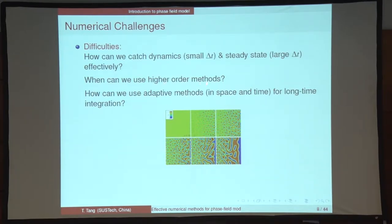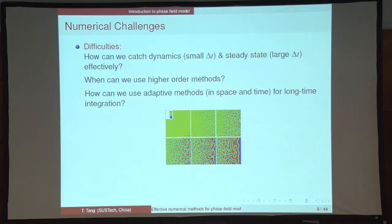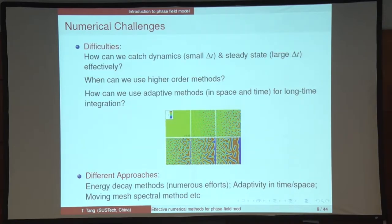Secondly, how can we use high-order methods while ensuring energy decreasing properties are satisfied? Thirdly, how can we use adaptive methods in space and time for long-time integration? I used to work with Professor Pingwen Zhang on this topic — adaptive methods for space adaptivity. Various energy decay methods have been developed. Looking at journals like SIAM or JCP in the past 10-15 years, there are many papers designing high-order numerical methods for phase field models.